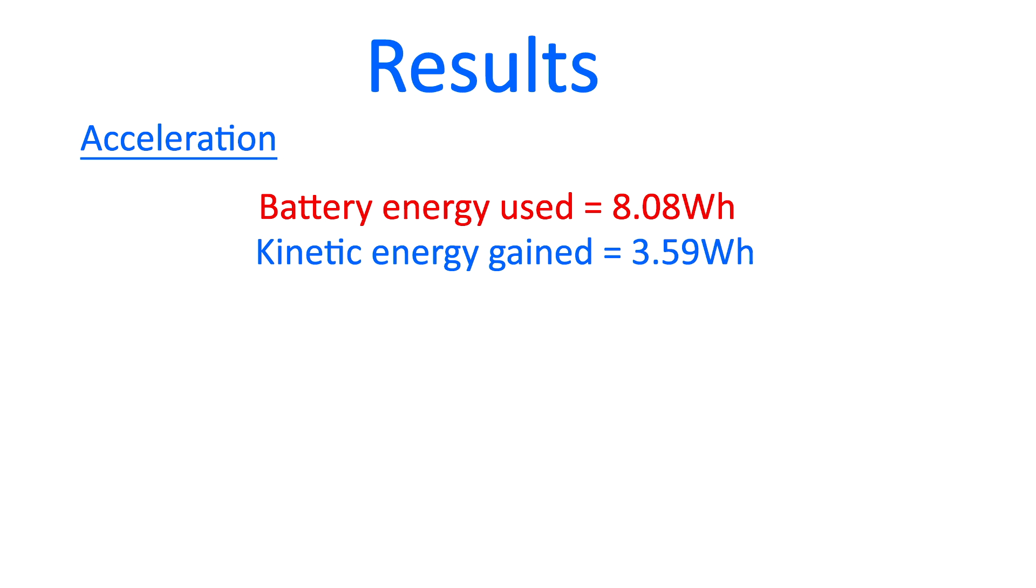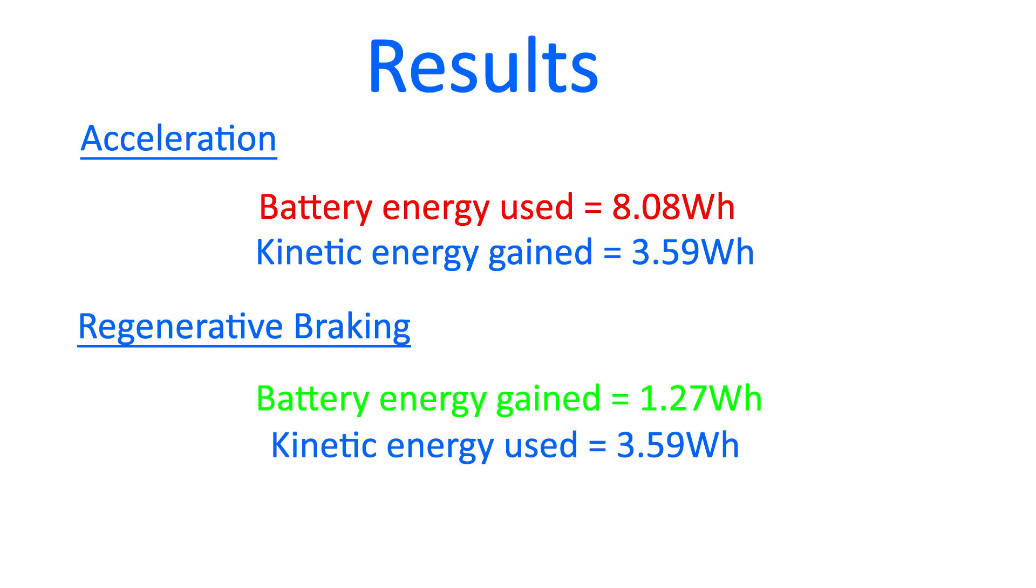So now that me and the bike are travelling at 35 miles an hour, I have a kinetic energy of 3.59 watt hours. So theoretically if I apply the regenerative braking, I should be able to charge 3.59 watt hours back into the battery. However, only 1.27 watt hours was recharged back into the battery out of that 3.59 watt hours of energy that I could have used.